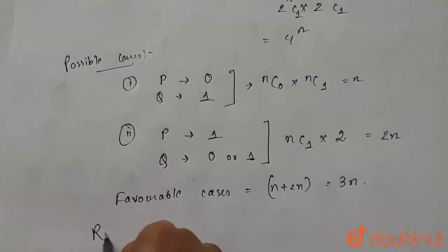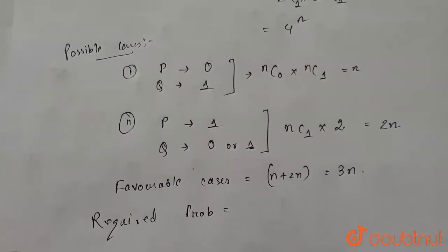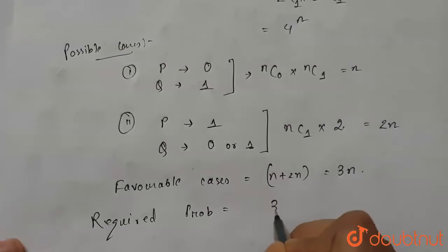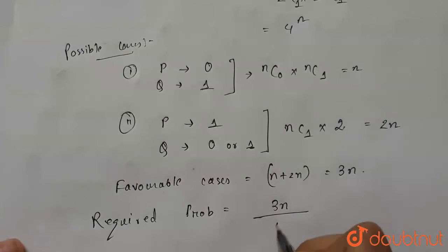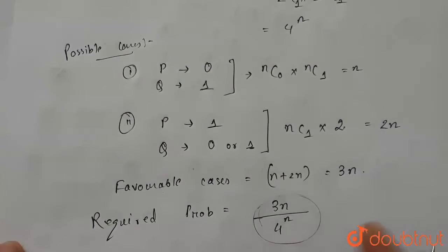The required probability is equal to favorable cases by total sample space which is equal to 3n by 4 to the power n. This is our required solution.